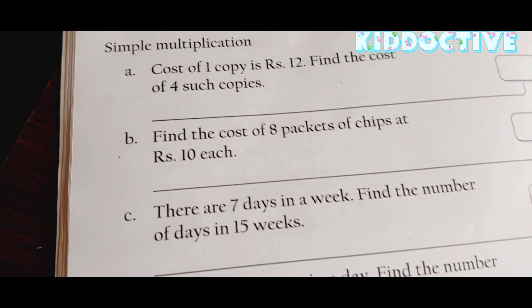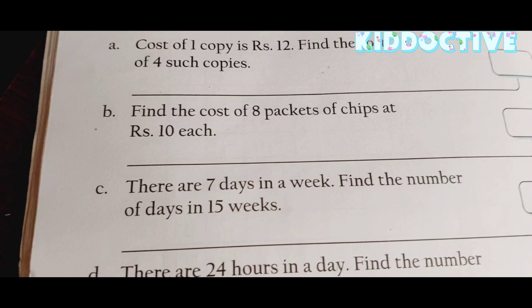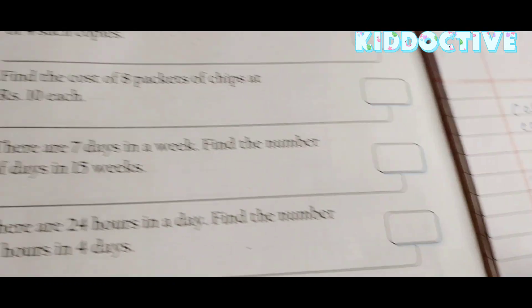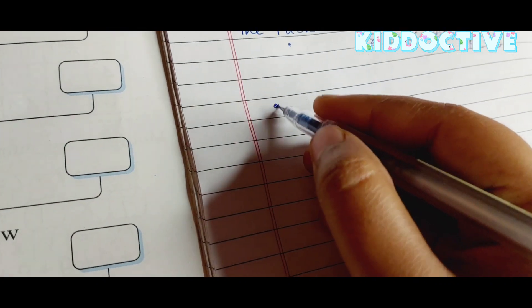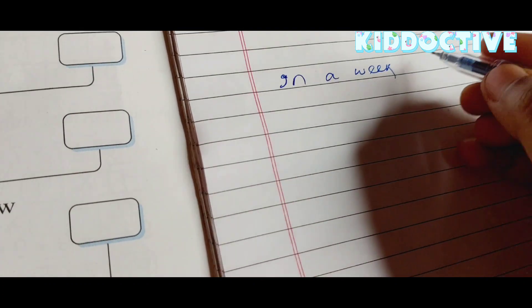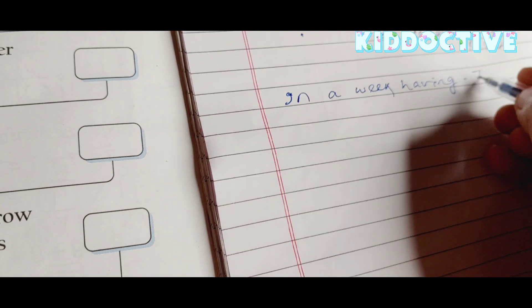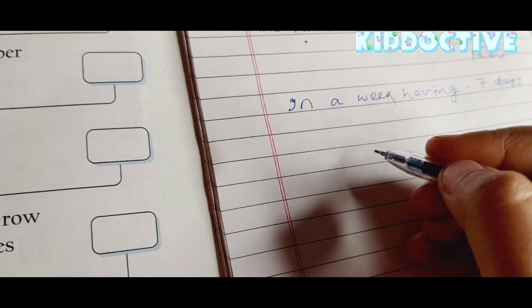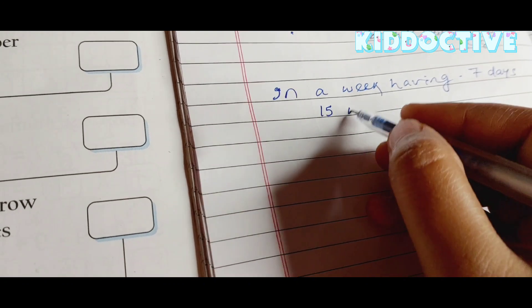Here there are seven days in a week. So in a week there are 7 days. Find the number of days in 15 weeks. So in a week we have how many days? Seven days.